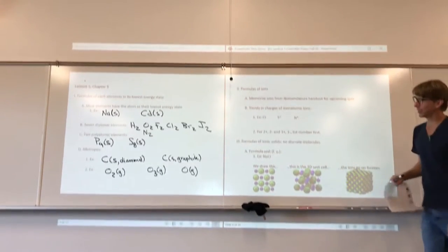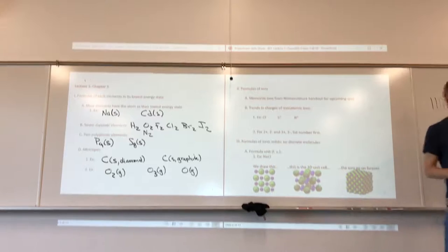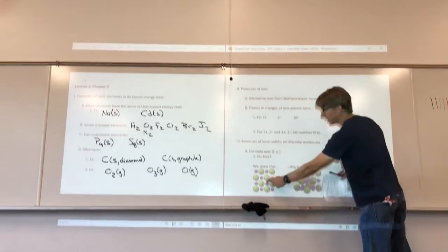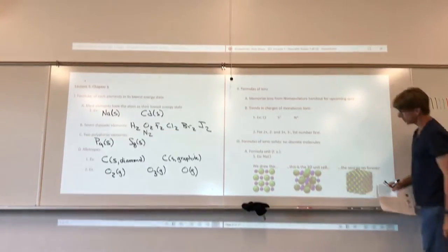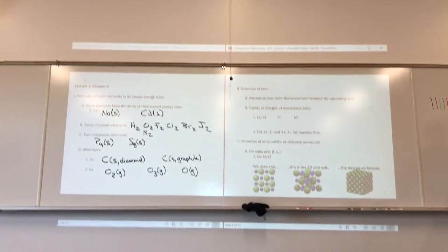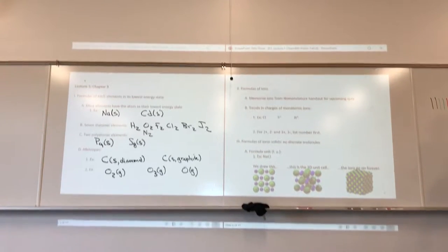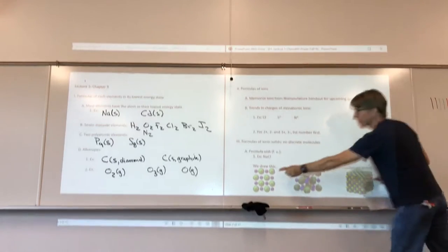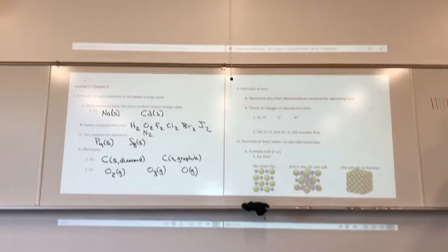Molecules is a word we use to describe covalently bonded compounds. Formula unit is for ionic compounds. The picture here — I would draw this a couple times for you throughout the semester — is a simplified representation of what's called the 3D unit cell, which really repeats in different directions. If you've ever seen a grain of salt, it has millions and billions of sodium ions and chloride ions in a regular three-dimensional order.